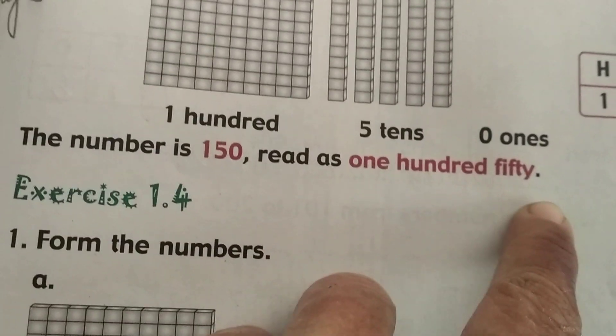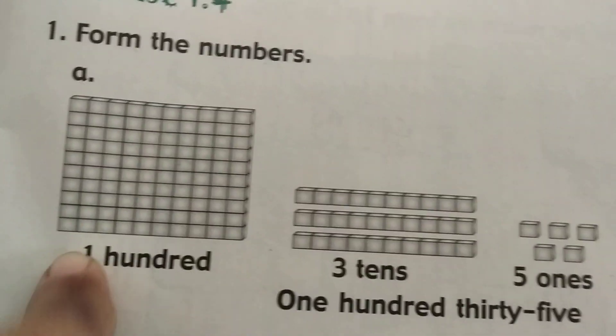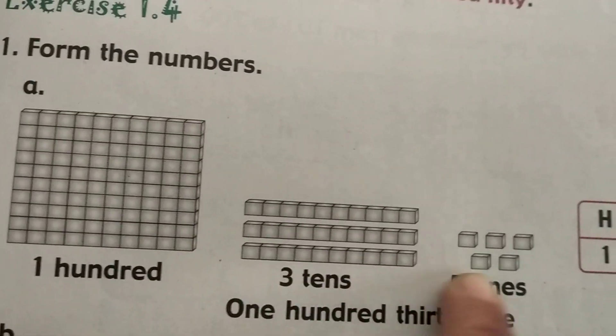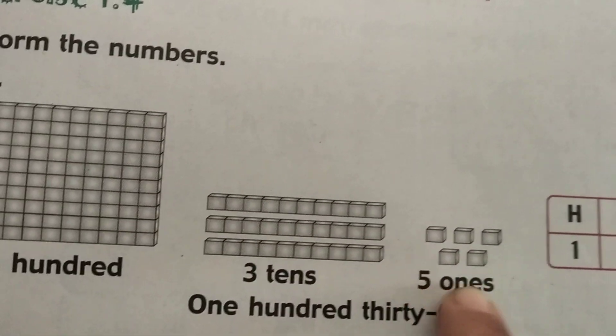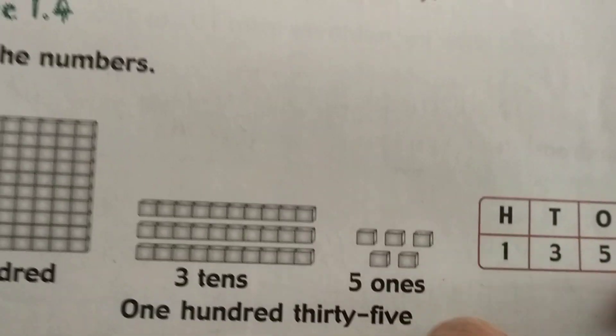Form the numbers. Here we have 1 hundred, 3 tens—1, 2, 3—and 5 ones—1, 2, 3, 4, 5. So 1 hundred, 3 tens, 5 ones equals 135.